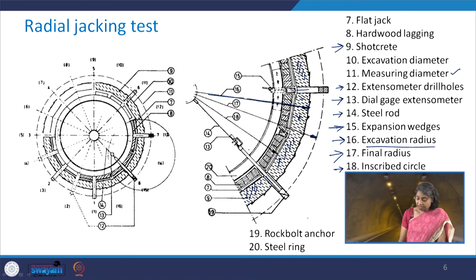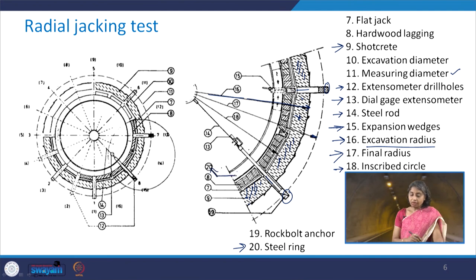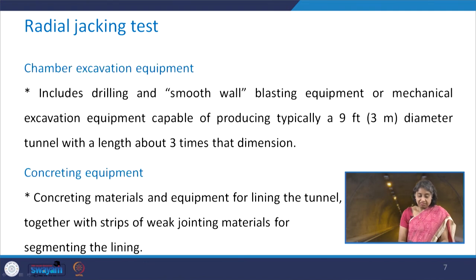Component 19 is the rock bolt anchors. Component 20 is the steel ring provided in the assembly. These are the various components of the radial jacking test setup.